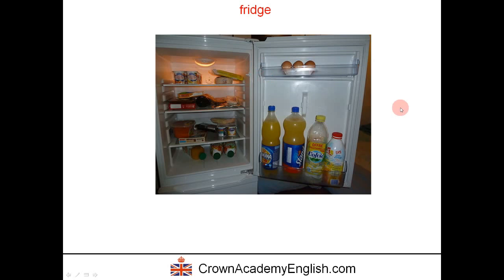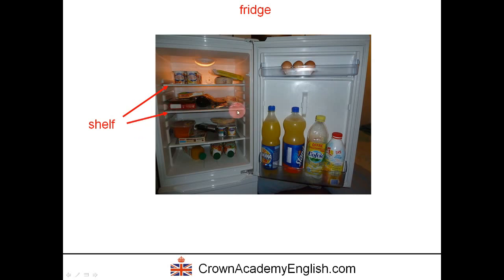Here is a photograph of the inside of a fridge. We can see there are some bottles inside the door of the fridge, and some eggs on the top. Here is a shelf — we put food on a shelf. This is the top shelf, this is the middle shelf, and this is the bottom shelf. There are some yogurts and some grated carrots on the bottom shelf.